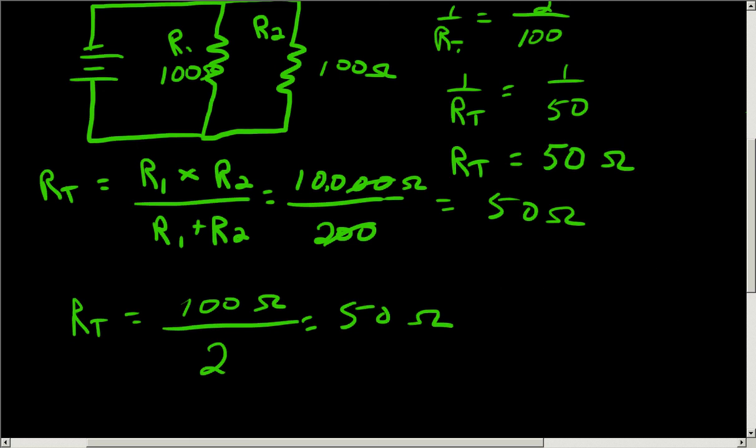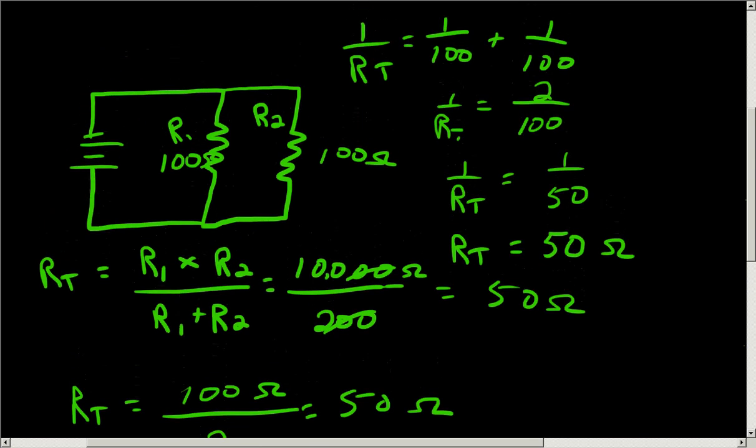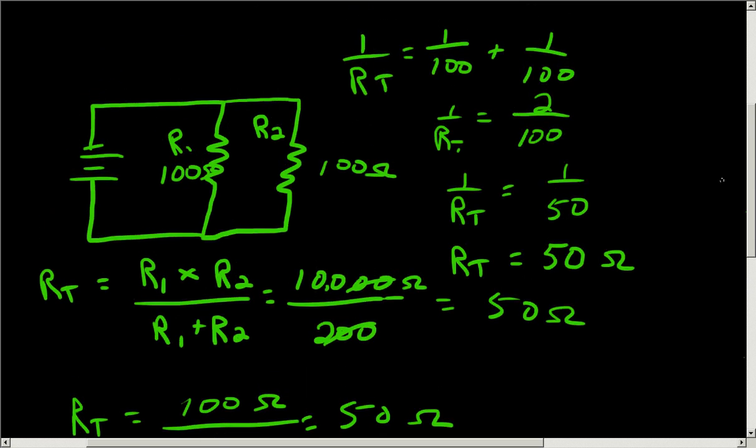So those are the three formulas that we can use to calculate for resistance in a parallel circuit. And by far the most commonly used formula is going to be this, what we call the reciprocal method, because you can use it for any number of resistors, for any parallel circuit, whether they're similar or unequal values. And if you have a good scientific calculator with an inverse reciprocal button, it makes the calculations very quick indeed.